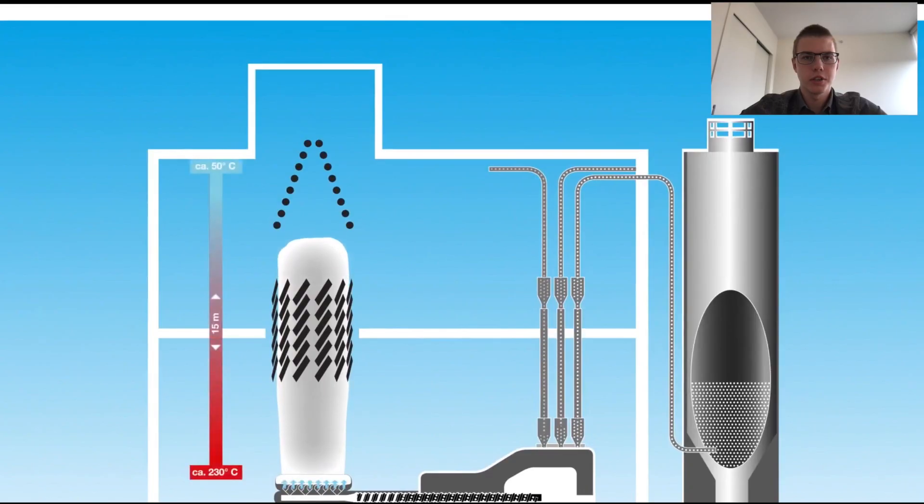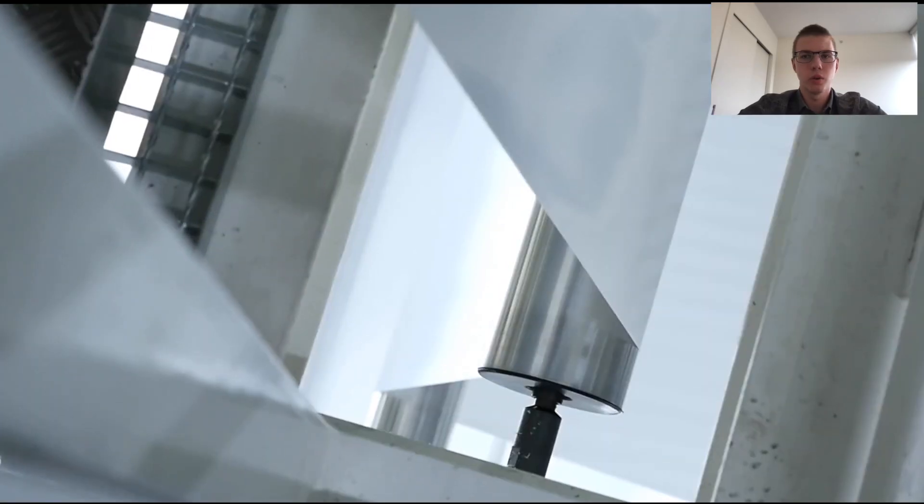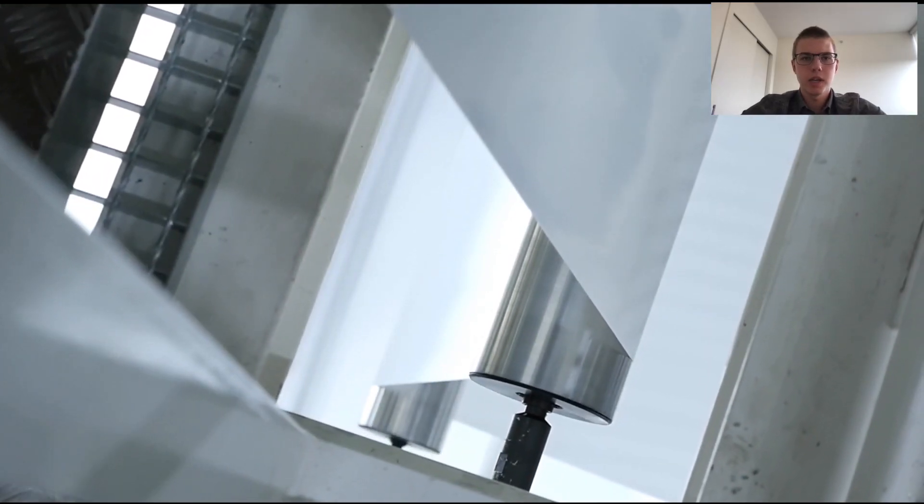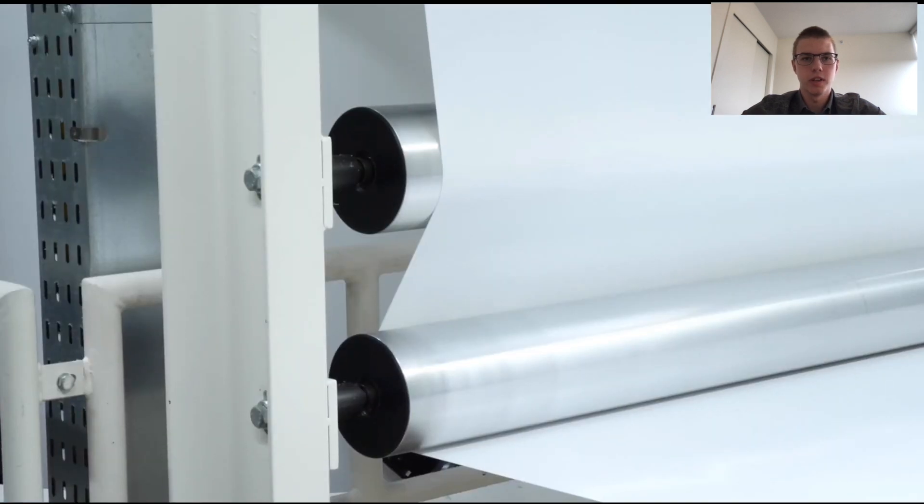After solidification at the frost line the film moves into a set of nip rollers which collapse the bubble and flatten it into two flat film layers. The puller rolls pull the film onto wind-up rollers. The film passes through idler rolls during this process to ensure that there is uniform tension in the film.